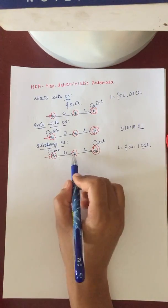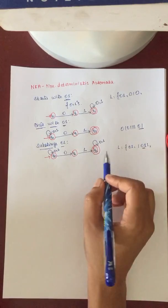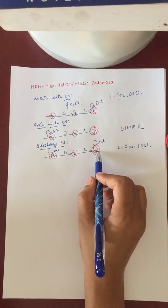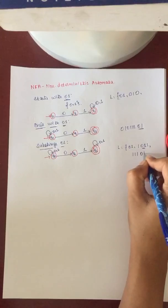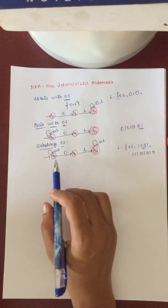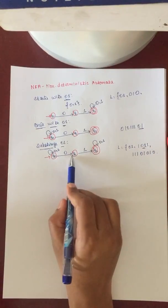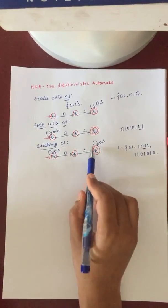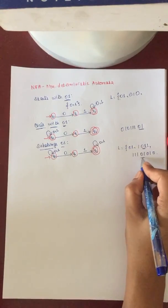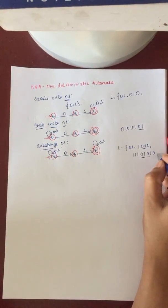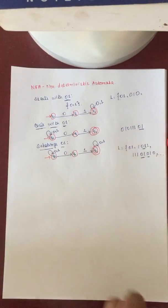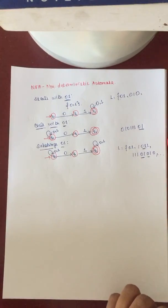For example, if the input is 1, 0, 1, 1 — we have a 0, 1 sequence here, so it accepts. If the input is 1, 1, 1, 0, 1, 0, 1, 0 — we have a 0, 1 sequence here as well. So this model is eligible to accept all input strings which contain the substring 0, 1.